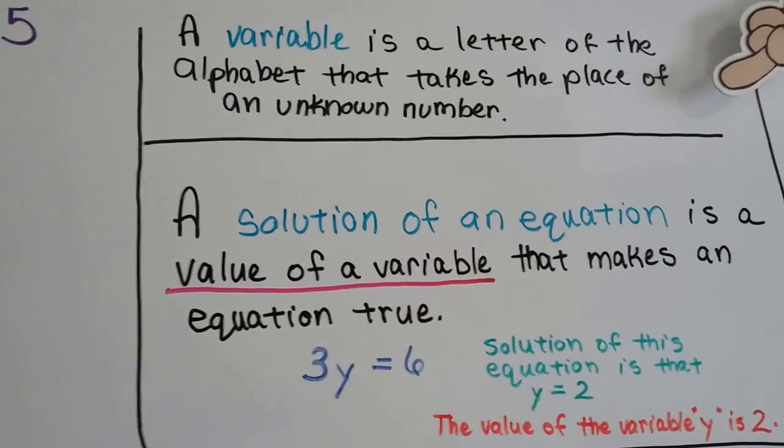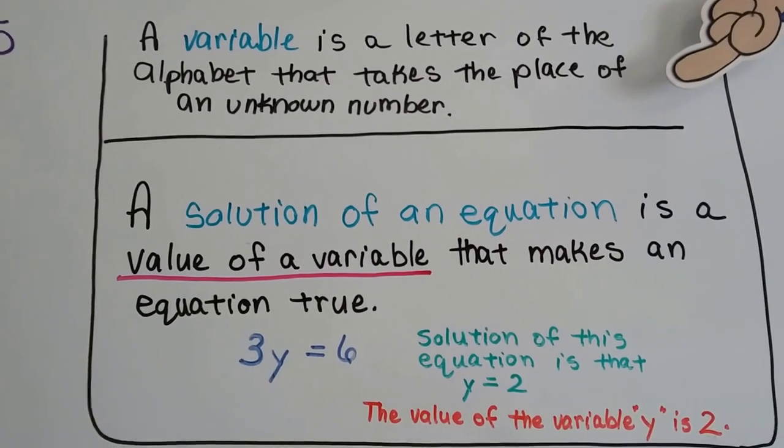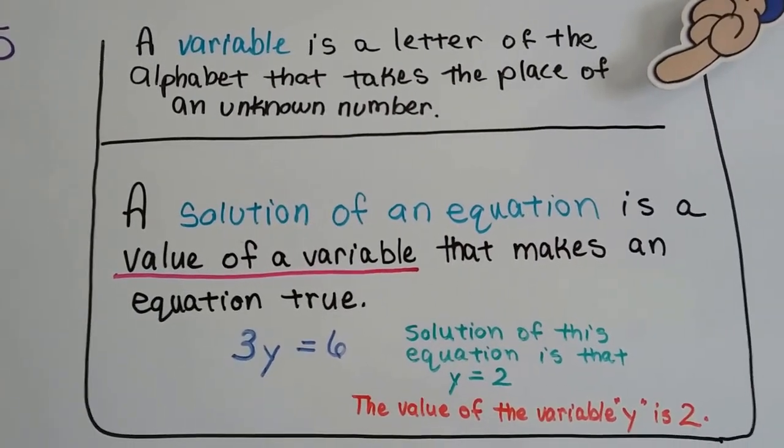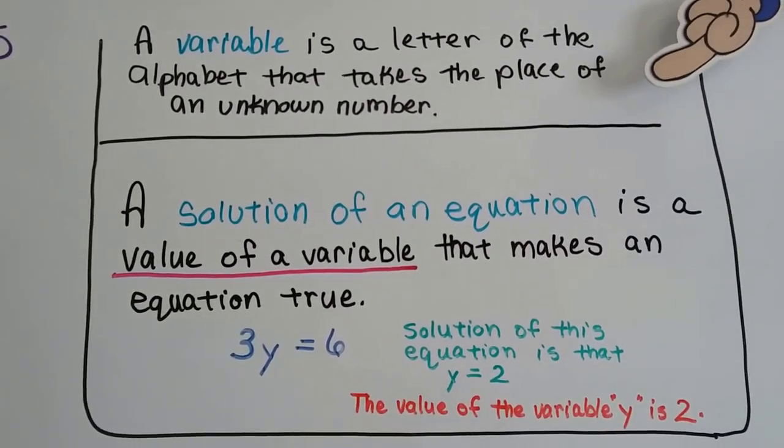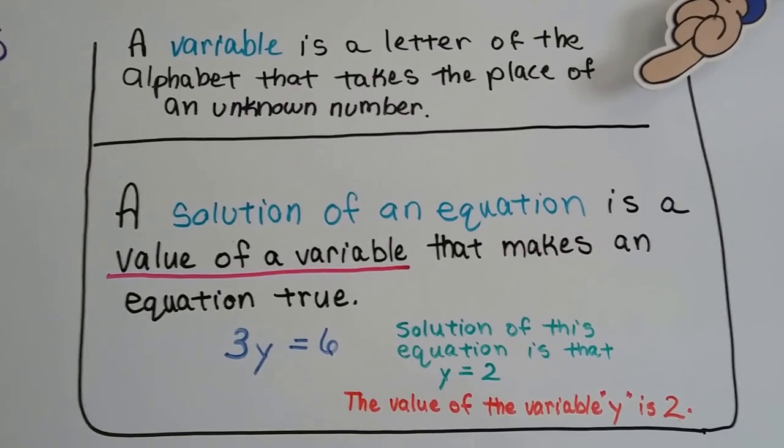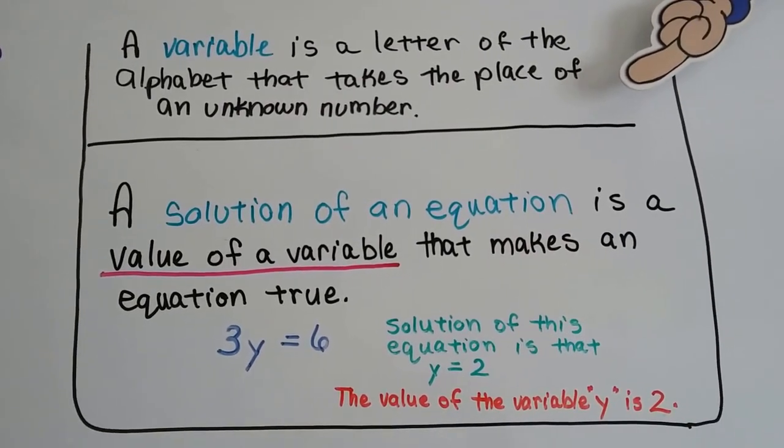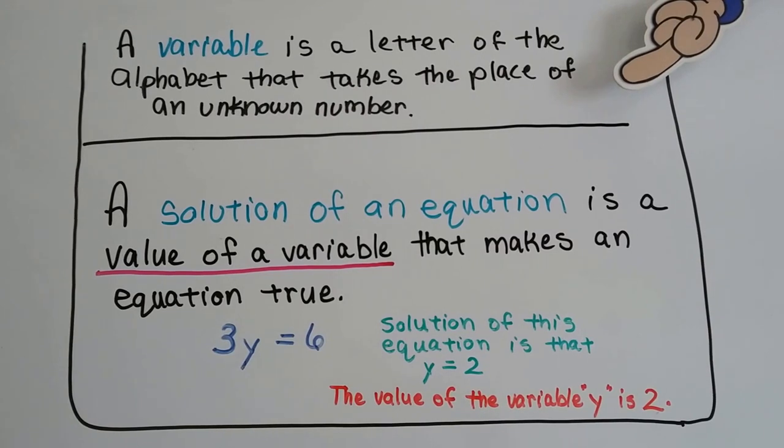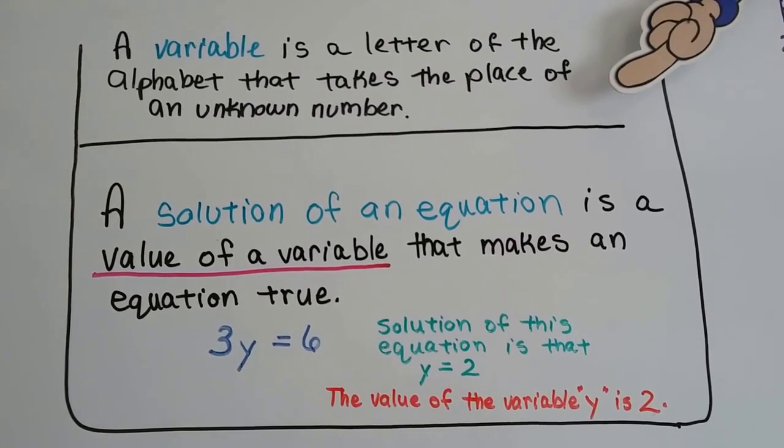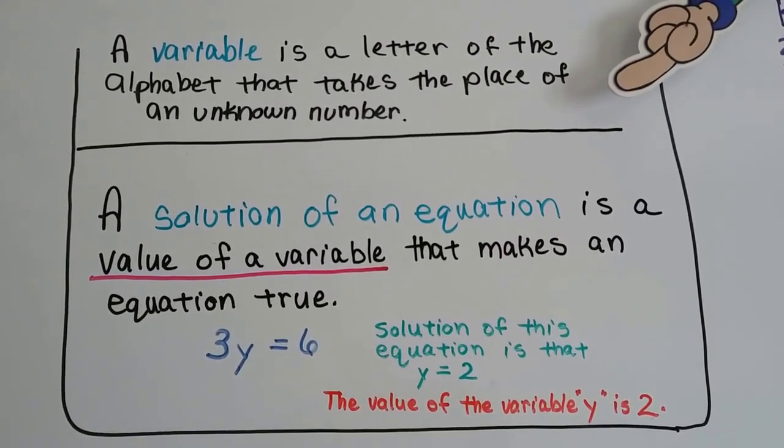As I said before, a variable is a letter of the alphabet that takes the place of an unknown number, and a solution of an equation is the value of a variable that makes the equation true. So 3y equals 6, the y would have to equal 2 to make the equation true. So the value of this variable, y, is 2.